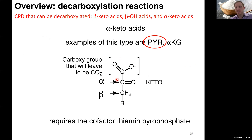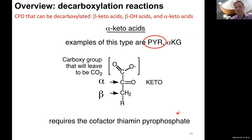Alpha-keto acids can also be decarboxylated, but in this case we need a cofactor: thiamine pyrophosphate, or TPP. I mentioned TPP already when we talked about ethanolic fermentation. Today we will actually look at how it works as part of the PDH reaction, and you can also see some structural insights on this cofactor in our supplemental video on cofactors. Importantly, pyruvate - which we're discussing today - is an alpha-keto acid.